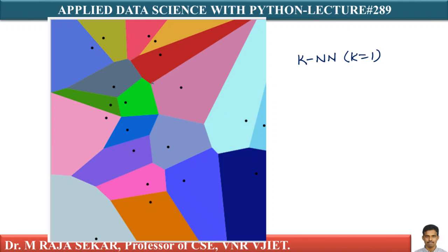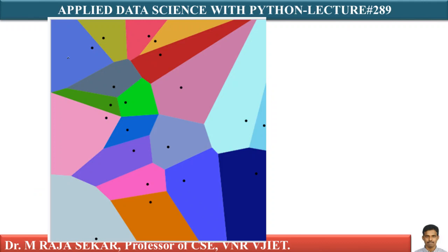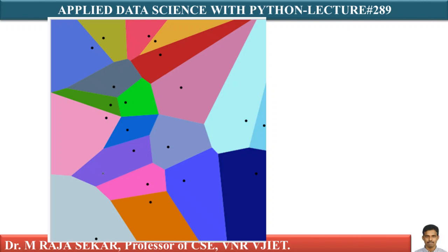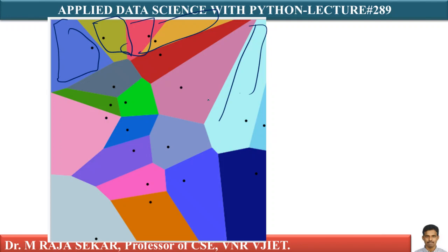Imagine these are my points — these are the different points. A Voronoi diagram basically breaks up the whole region. This is a 2D region with an x-axis and y-axis. Each of these cells are colored — this is one cell, this is another cell, all these cells are colored.